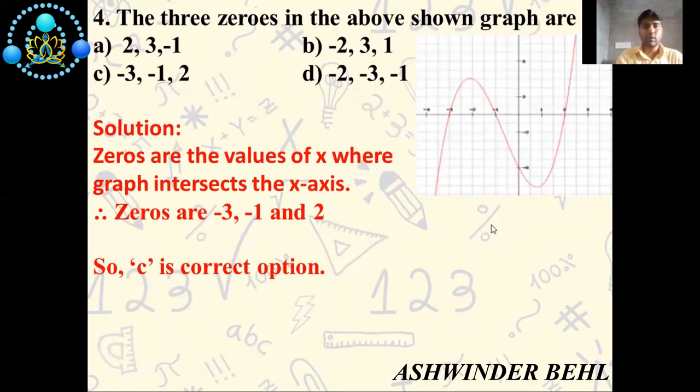Now fourth question. The three zeros in the above shown graph are: option A is 2, 3, -1; option B is -2, 3, 1; option C is -3, -1, 2; option D is -2, -3, -1.